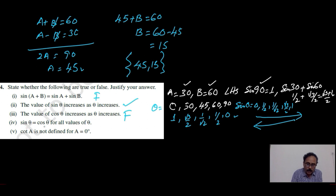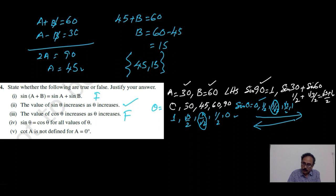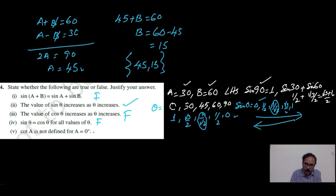Now, sinθ equals cosθ for all values of θ — just now we have written the values of sinθ and the values of cosθ, so they are not equal. Sin0 is 0, whereas cos0 is 1. But if you look at 45, it is the same: sin45 equals cos45. Therefore this statement is also wrong — it is true only for 45. Now, cosA is not defined for A equal to 0 — this is actually about tanA: we have defined tan90 equals infinity. So tan A is not defined for A equal to 90. This is a true statement.